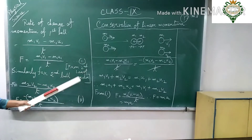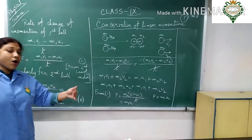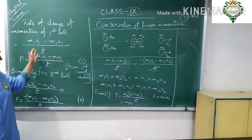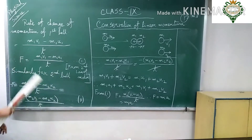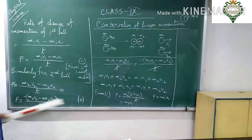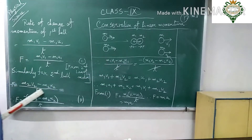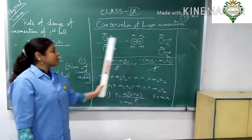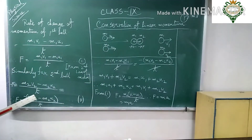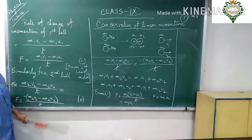This comes from Newton's second law of motion — F equals the rate of change of momentum. Similarly, for the second ball, since it moves in the opposite direction, minus F is equal to M2·V2 minus M2·U2 divided by T. This is equation number two.